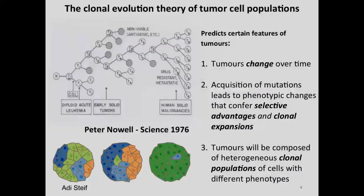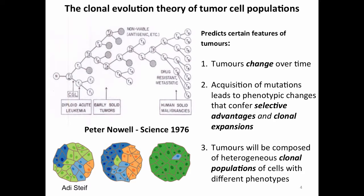I wanted to start with just thinking about cancer and how it progresses and putting cancers into evolutionary context — this will become clear over the course of the lecture why this is important. The clonal evolution theory of tumor cell populations was first proposed in 1976, quite some time ago, and really casts cancer into the rubric of phylogenetics or evolutionary theory.